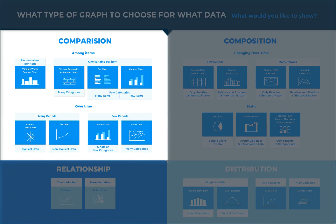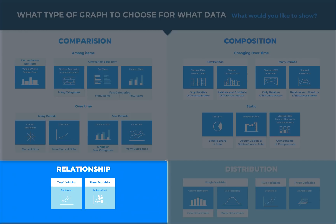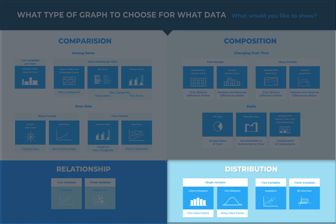A comparison tries to set one group of variables apart from another and display how those two variables interact, like Xbox and PlayStation Global Sales. A composition tries to collect different types of information that make up a whole and display them together, like website visitors by gender. A relationship tries to show a connection or correlation between two or more variables through the data, like car weight and how many miles it makes per gallon. A distribution tries to lay out a collection of related or unrelated information to see how it correlates, if at all, and to understand if there is any interaction between the variables, like weight distribution per gender.